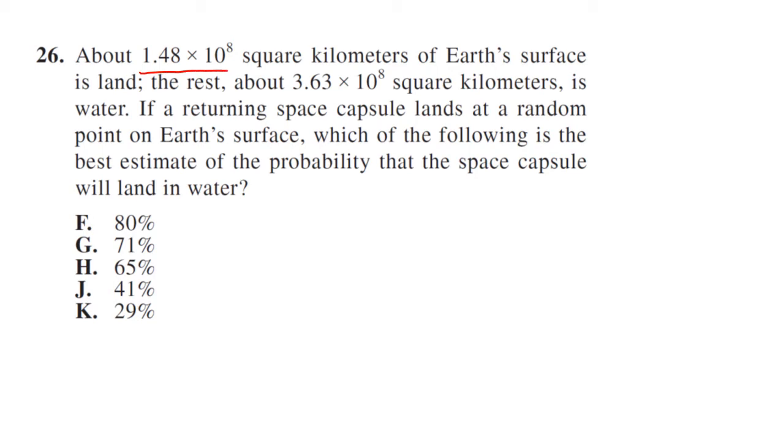About 1.48 times 10 to the 8 square kilometers of Earth's surface is land. The rest, 3.63 times 10 to the 8, is water. If a returning capsule lands at random on Earth's surface, which of the following is the probability the capsule will land in water? Okay, so probability is what you want, and what we want is water, over what you have, which is everything.